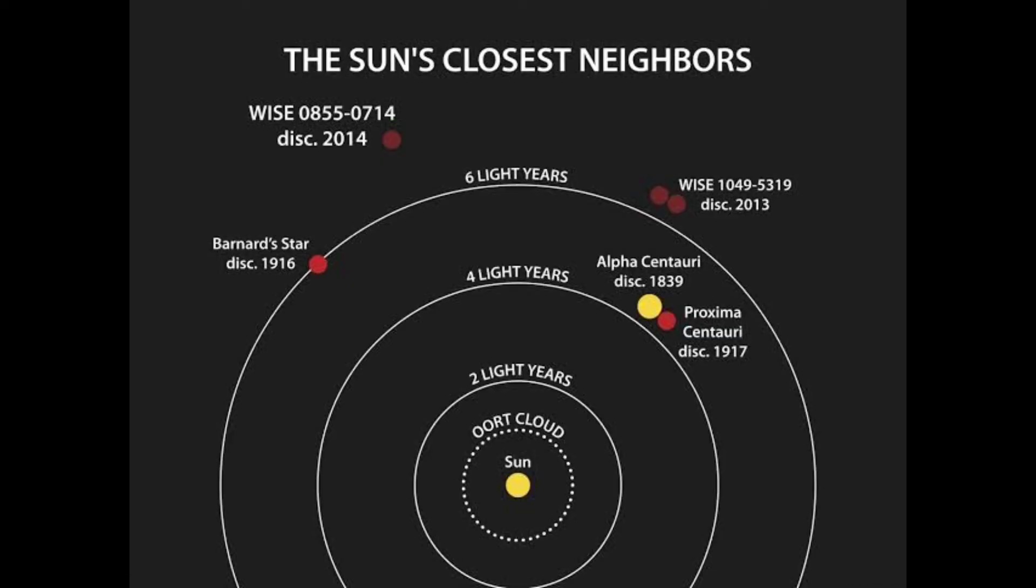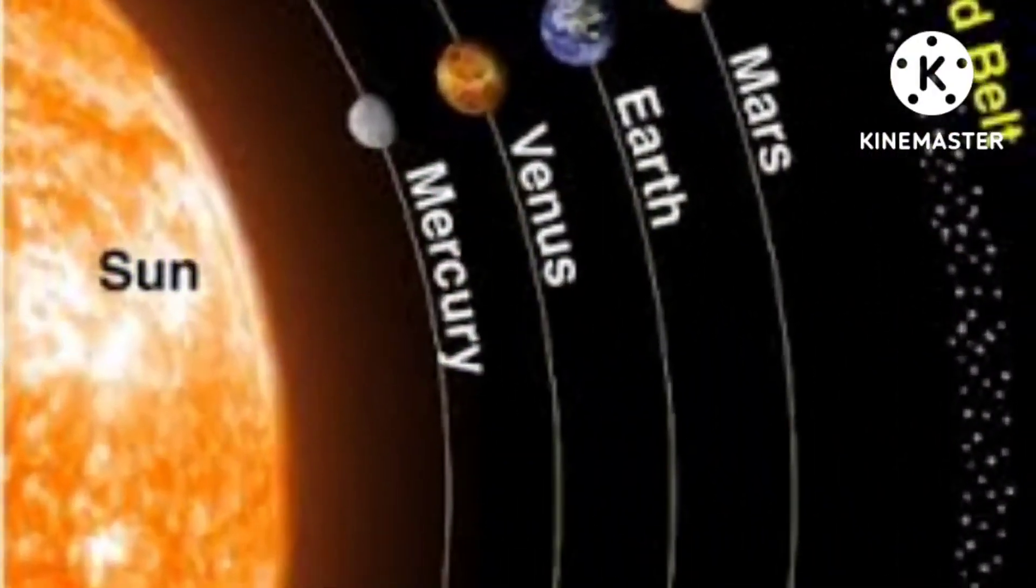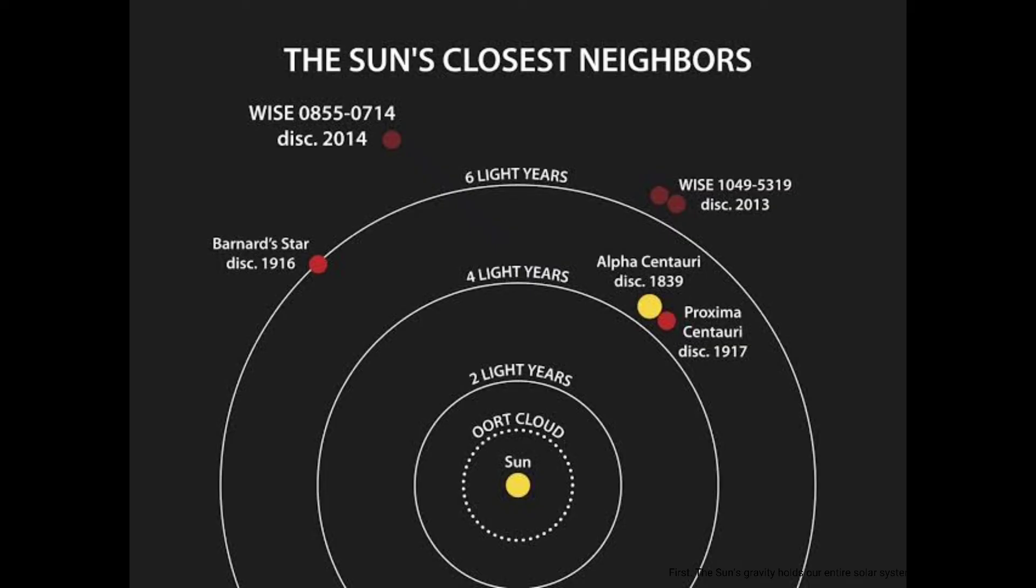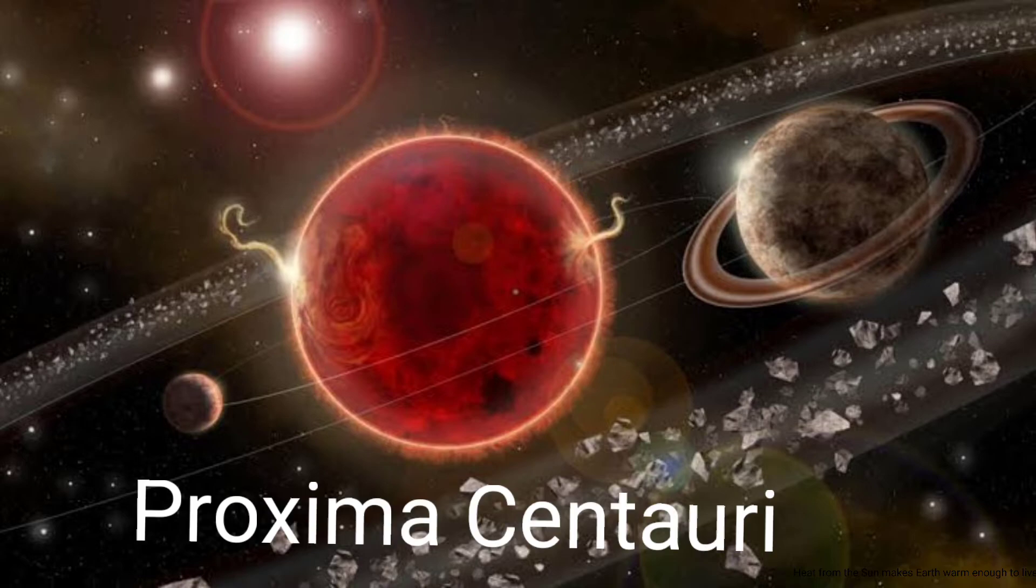The sun's neighbors. In our solar system, the closest planet to the sun is Mercury. Our sun's closest star neighbor is called Proxima Centauri.